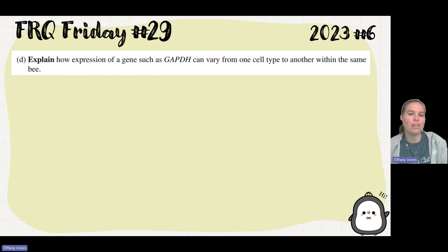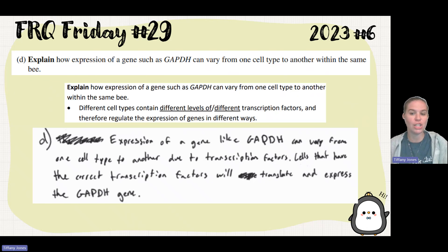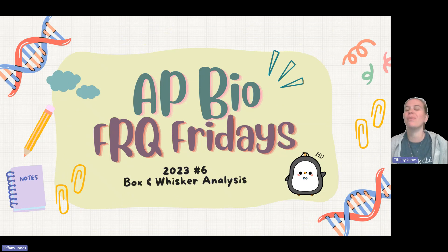And then part D, explain how the expression of a gene such as GAPDH can vary from one cell type to another within the same bee. And so this all has to do with transcription factors and other components that are part of that expression. So different cell types have different levels or different transcription factors, and therefore will regulate that expression in a different way. The student said expression of a gene like GAPDH can vary from one cell type to another due to transcription factors. Cells that have the correct transcription factors will translate and express the GAPDH gene. Hope that was helpful. Remember, AP5 was just a success by all.